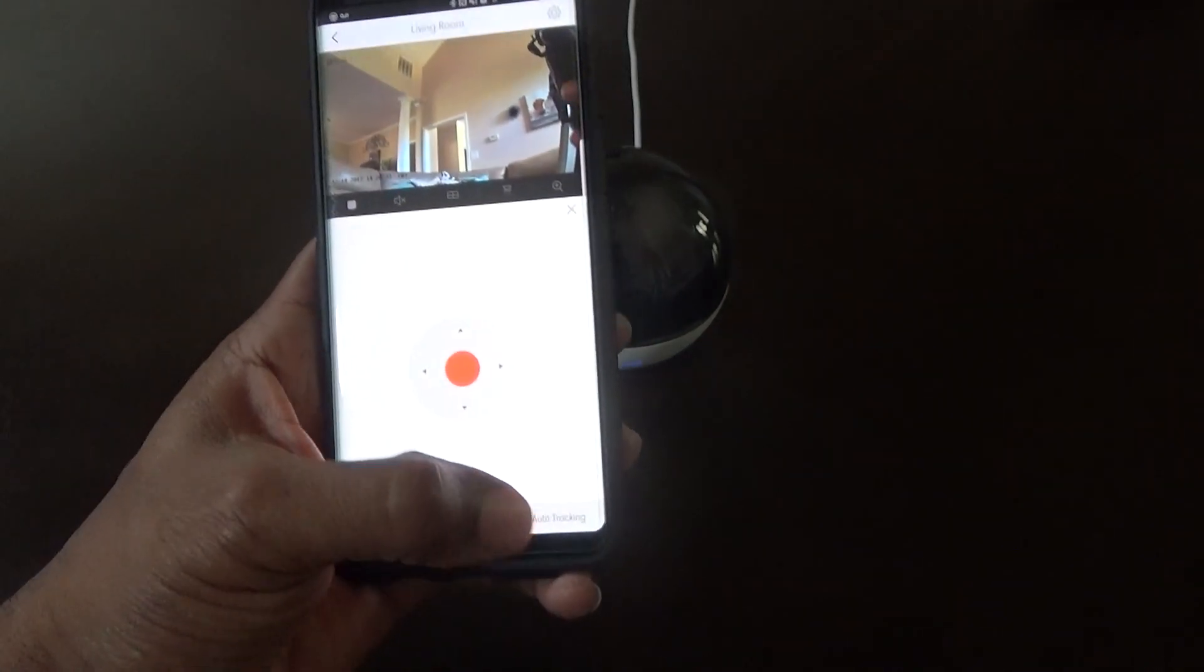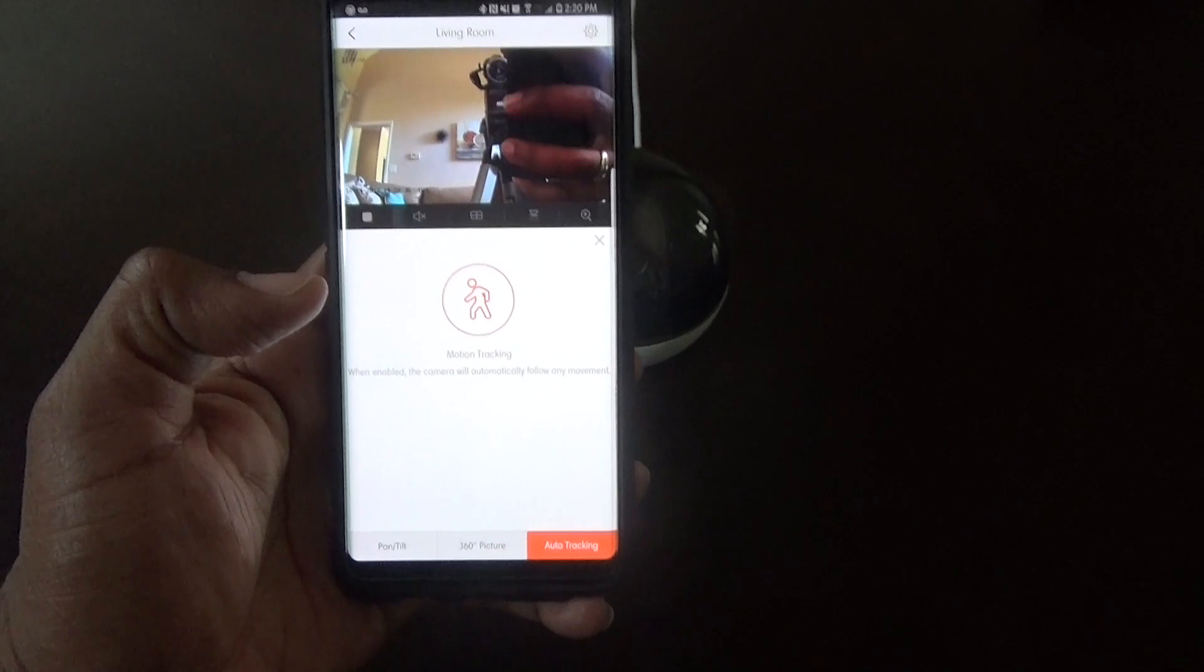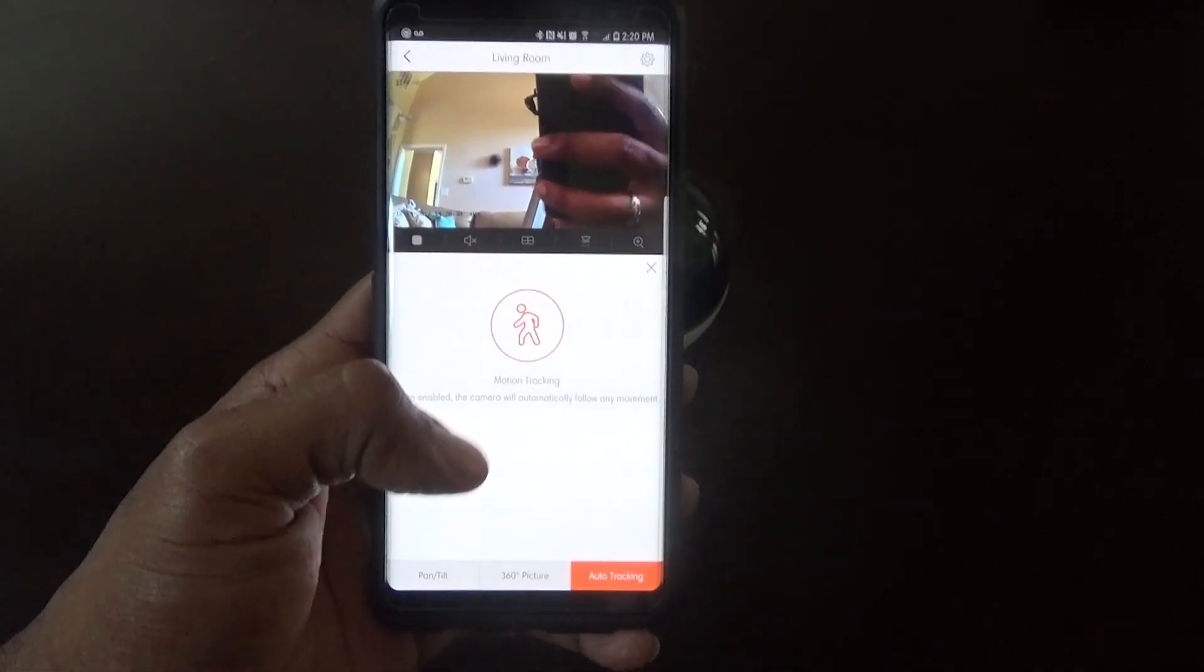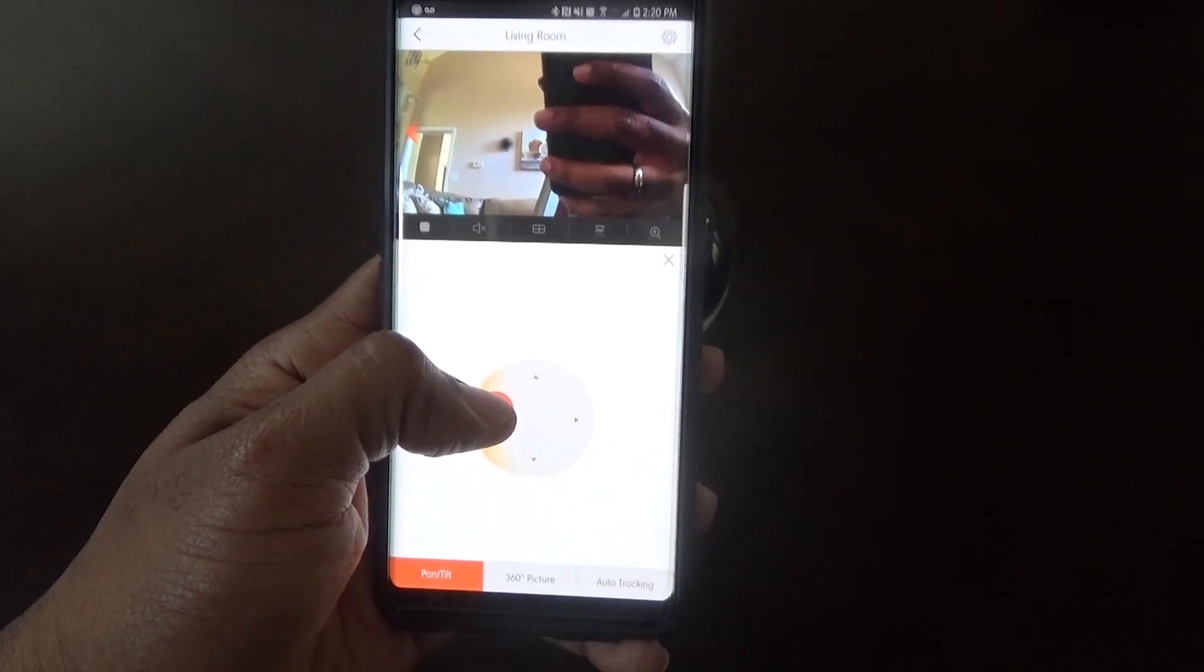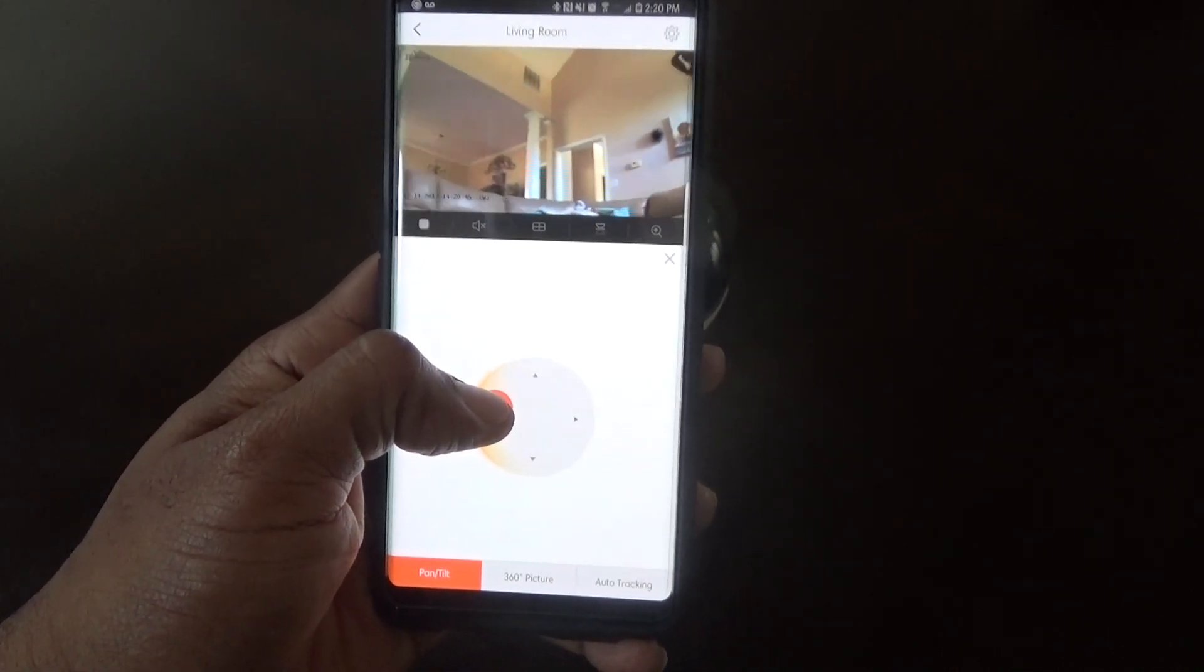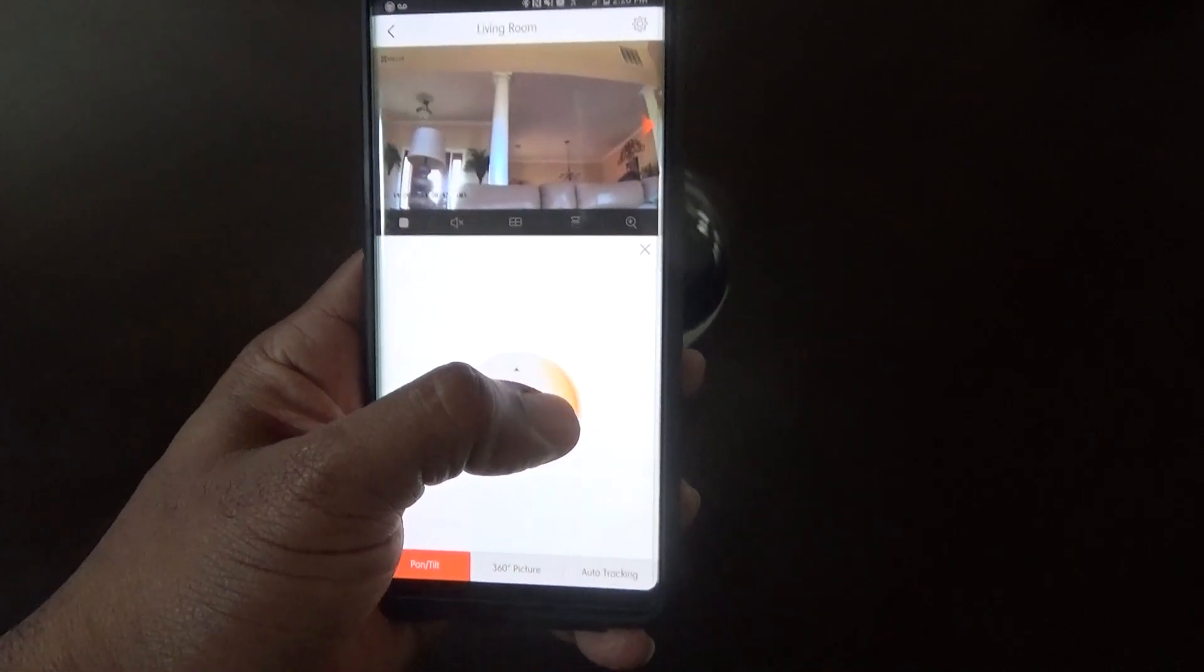So you can move it. It's actually doing the motion thing so let's turn off the auto tracking. We'll go back into pan and tilt and we're going to actually move this camera.